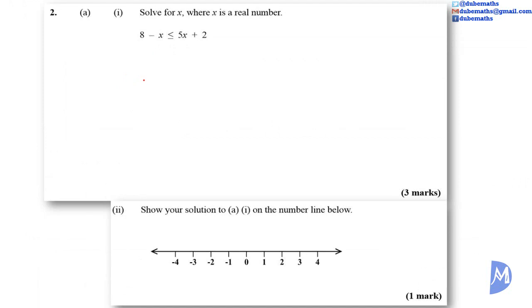We want all the X's on one side and all the numbers on the other side. So let's carry this 5X to the left hand side. We are going to subtract 5X from both sides. 8 minus X subtract 5X is less than or equal to 5X plus 2 minus 5X. Minus X minus 5X is equal to negative 6X. We get 8 minus 6X. It's less than or equal to 5X minus 5X is 0. So remain with only 2.